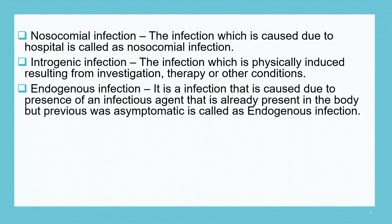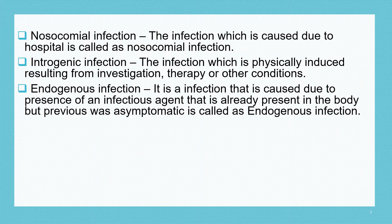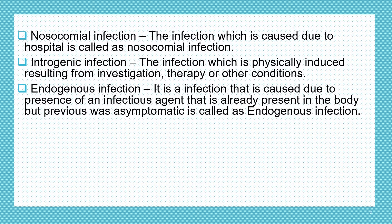Eighth is endogenous infection. It is an infection caused due to the presence of an infectious agent that is already present in the body but was previously asymptomatic. The parasite is already present in the body but doesn't show any symptoms; however, once it gets the chance, it can cause an infectious disease. Such infection is called endogenous infection.